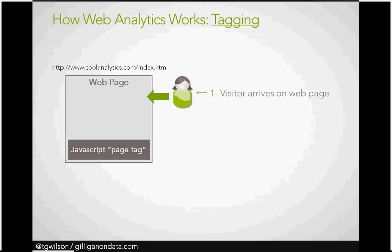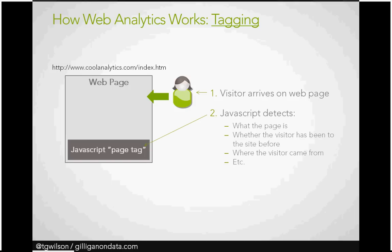When a visitor comes to your page, the JavaScript detects: what page is this? It's coolanalytics.com/index.htm. It may detect the title tag, whether or not the visitor has been on the site before by reading a cookie, the visitor's screen resolution, and what was the referring site — because the browser passes that information along. Where did you come from? Did you click on a link to get here? It's really a long list of what it can collect.